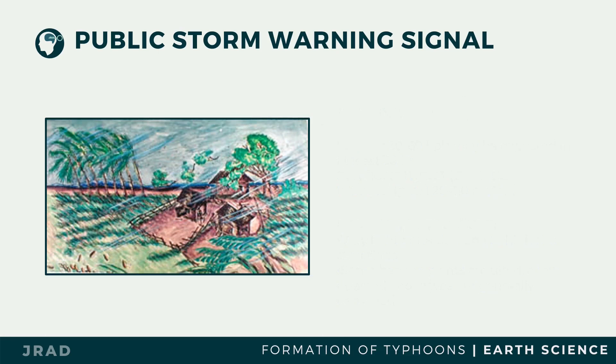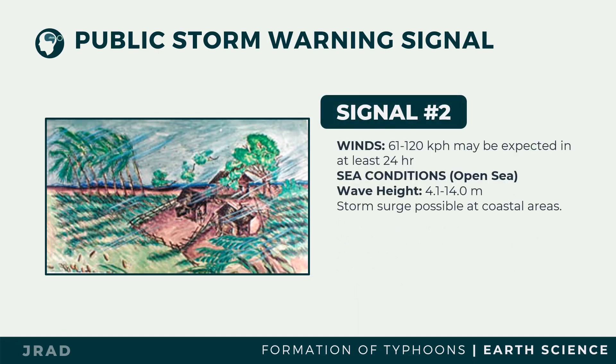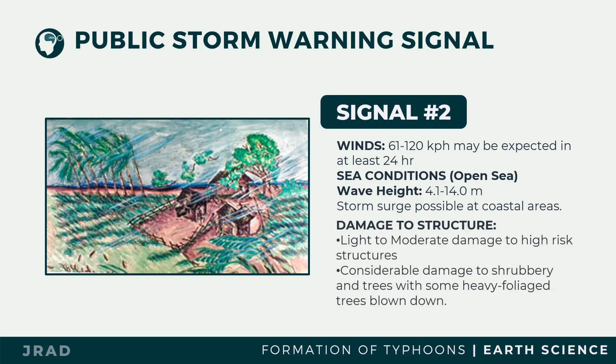Tropical Cyclone Wind Signal Number Two: wind speeds of 61 to 120 kilometers per hour may be expected in at least 24 hours. Storm surge is possible at coastal areas. There is light to moderate damage to higher structures. Unshielded, old, dilapidated schoolhouses, makeshift shanties, and other light-material structures are partially damaged or unroofed. Most banana plants and a few mango trees are downed or broken. Considerable damage to shrubbery and trees with some heavy foliage trees blown down.